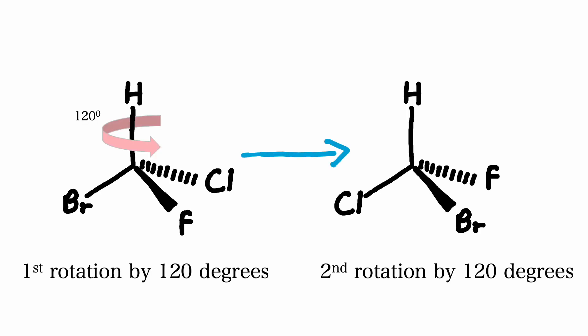If we rotate it again by another 120 degrees, we see that fluorine moves into the page, bromine comes out of the page, and chlorine is on the plane of the page.